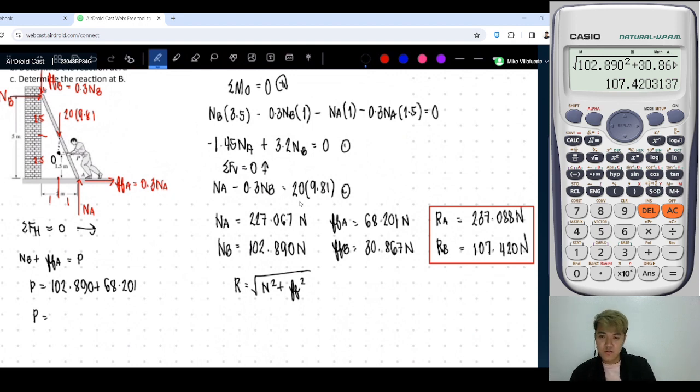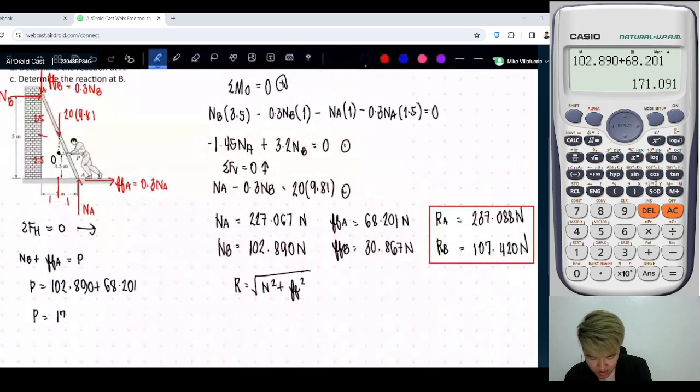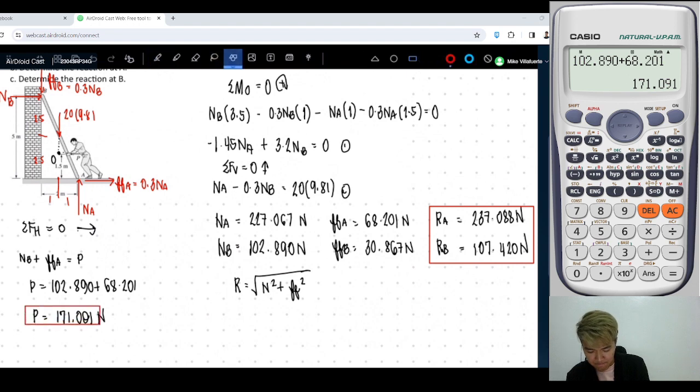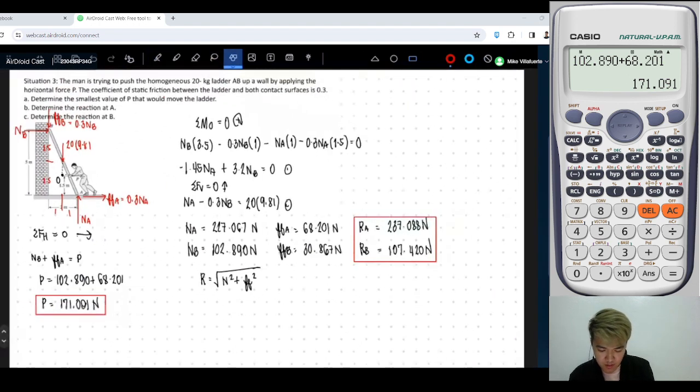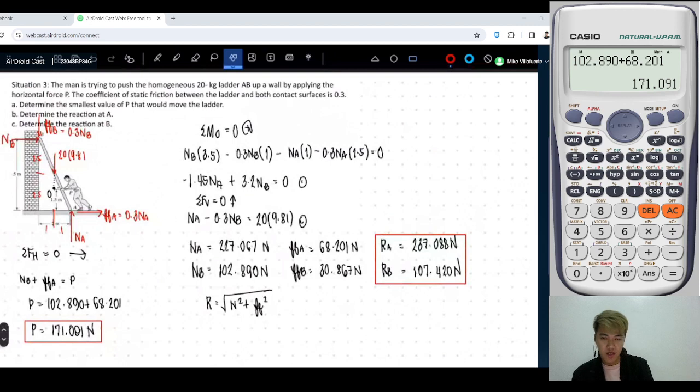That is equal to 102.89 plus 68.201. So P is equal to, just add them, 102.89 plus 68.201, that is equal to 171.091 N. Okay, so I'll give you time to screenshot, to copy.